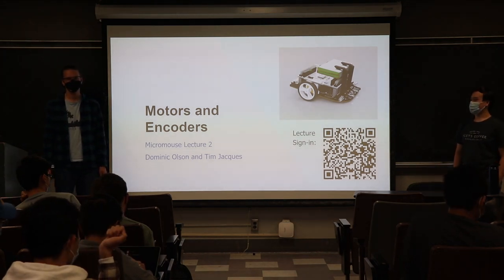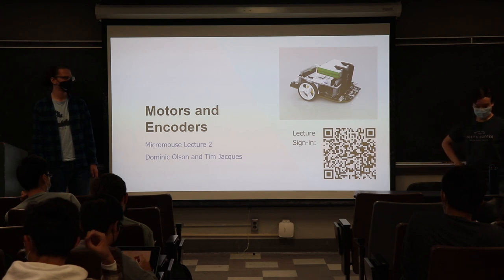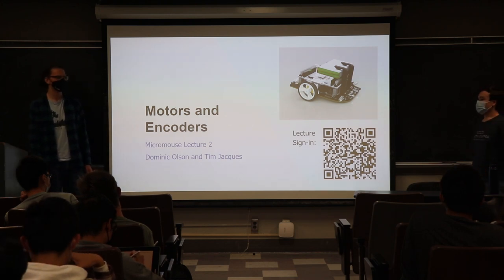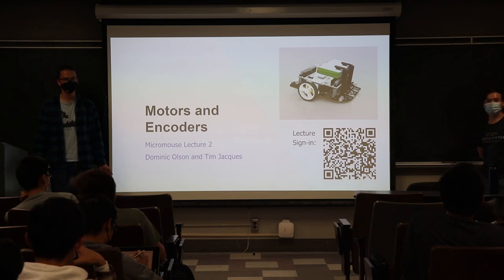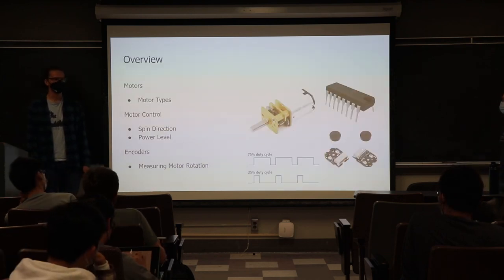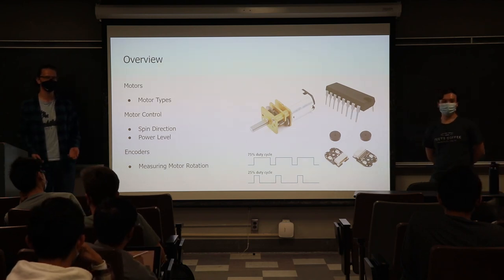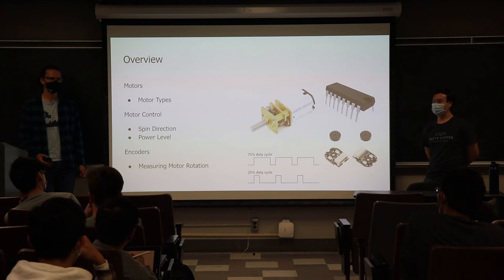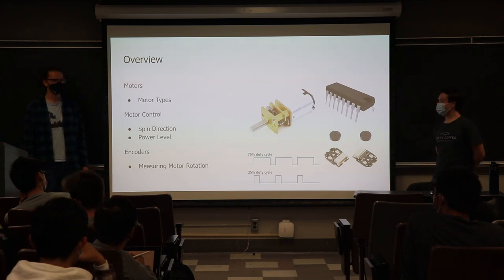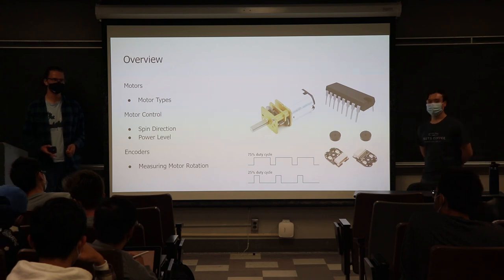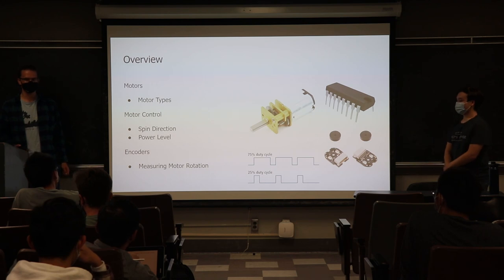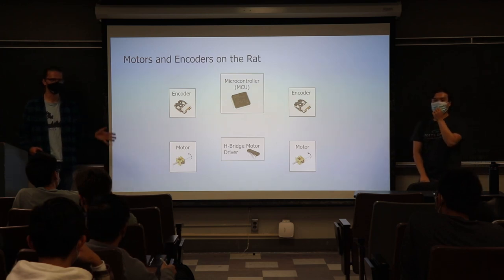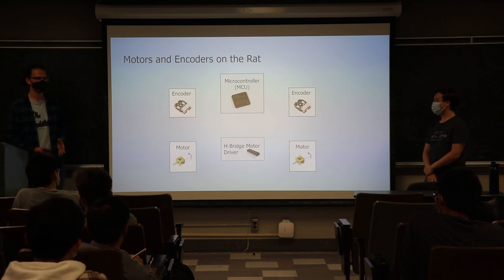Welcome to our second micromouse lecture this year. Today we're going to be talking about motors and encoders. We'll do a quick overview of some types of motors you could use, which motors we're going to be using for micromouse, how to control motors — both the direction they spin and how fast they spin — and then we'll talk about encoders, which is how we measure how far a motor has spun so we can control our motors precisely.